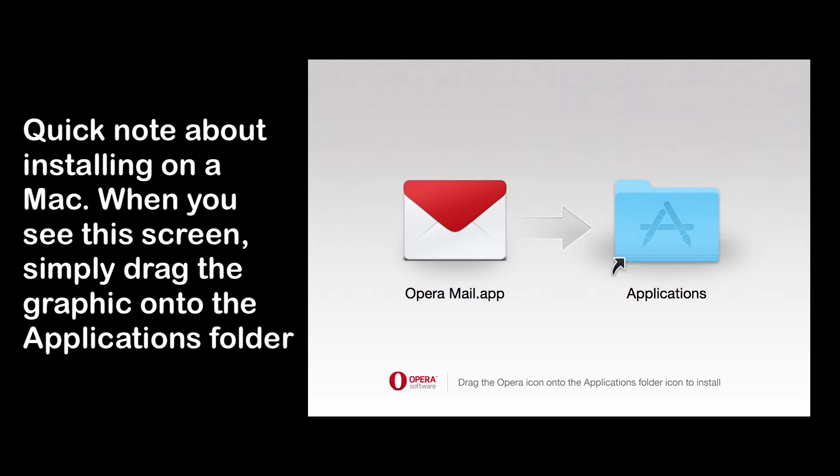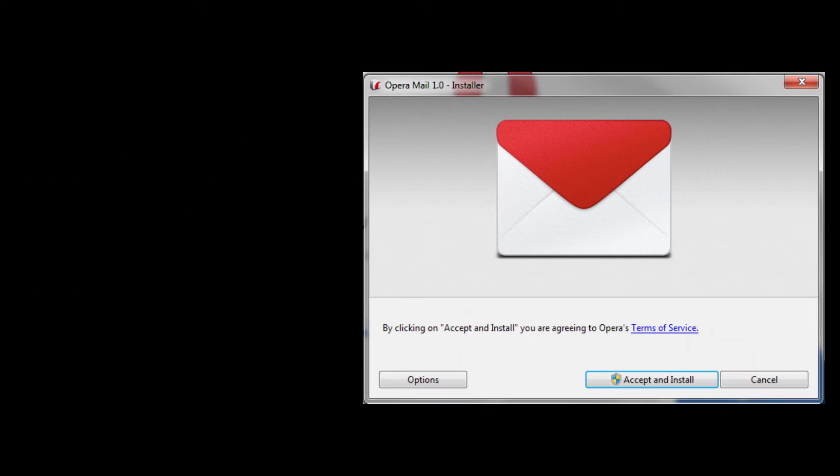If you're installing Opera Mail Client on a Mac, it's really a simple matter of opening the DMG file when you double click on it. When you see the Opera Mail app in the Applications arrow, you just drag and drop the Opera Mail app on top of the Applications arrow to install it.